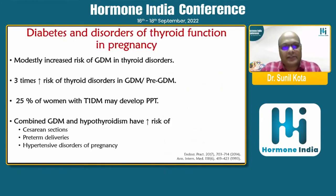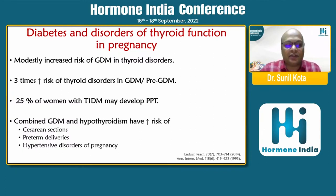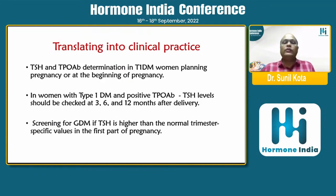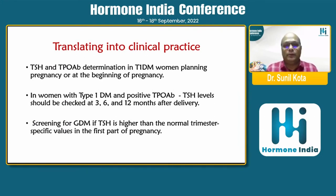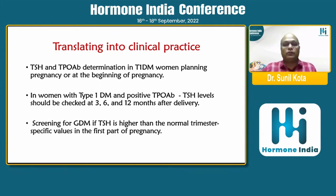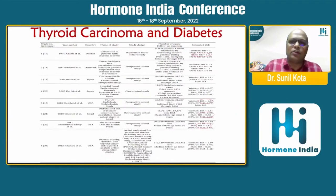What about pregnancy? There is a modestly increased risk of GDM in thyroid disorder, a three-times increased risk of thyroid disorders in GDM and pre-GDM, and 25% of women with type 1 diabetes may develop postpartum thyroiditis. If these two disorders coexist, there is an increased chance of cesarean section, preterm deliveries, and hypertensive disorders of pregnancy. For a type 1 diabetic patient planning for or at the beginning of pregnancy, check TSH and TPO antibody. If only antibody positivity is found, TSH should be checked at 3, 6, and 12 months after delivery. Screening for GDM should be done if TSH is higher than normal trimester-specific values.